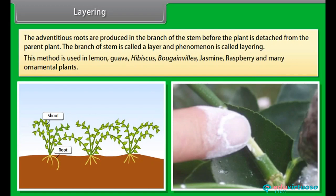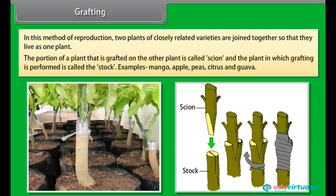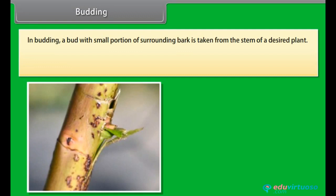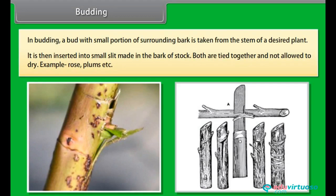In grafting, two plants of closely related varieties are joined together so that they live as one plant. The portion of a plant that is grafted onto the other plant is called the scion, and the plant in which grafting is performed is called the stock. Examples include mango, apple, pear, citrus, and guava. In budding, a bud with a small portion of surrounding bark is taken from the stem of a desired plant, inserted into a small slit made in the bark of the stock, and both are tied together and not allowed to dry. Examples include rose and plum.